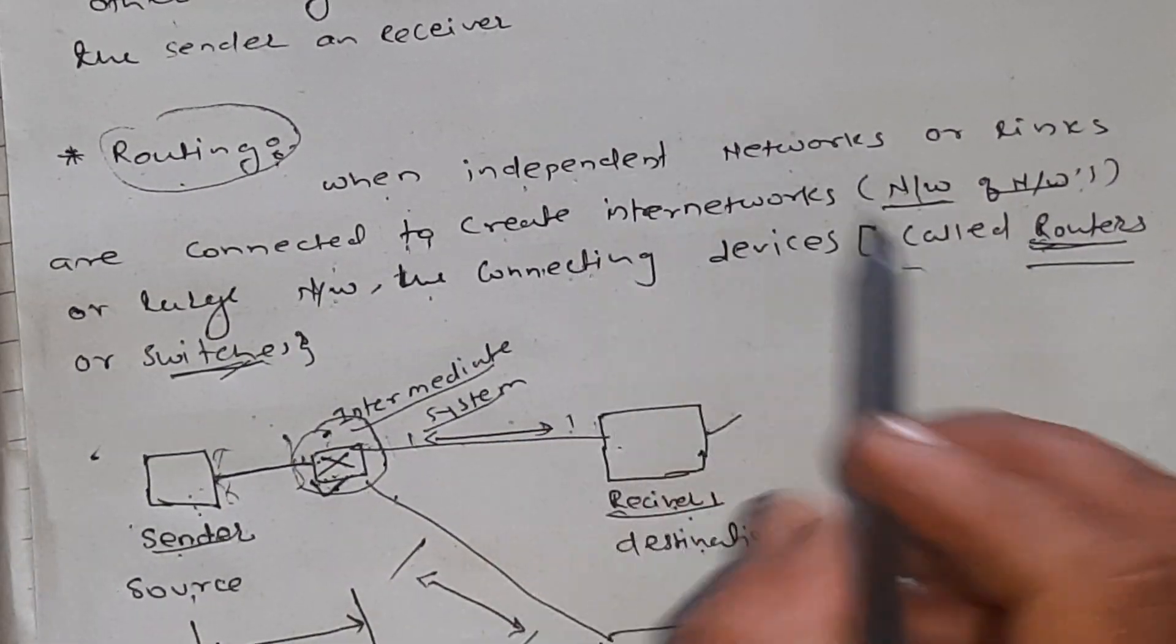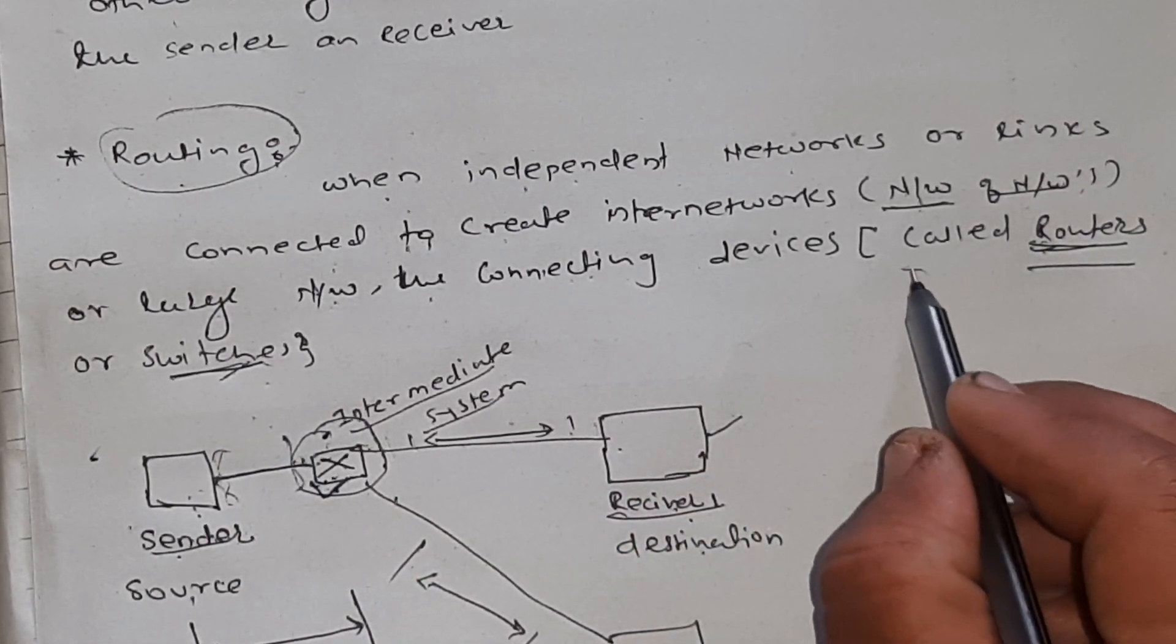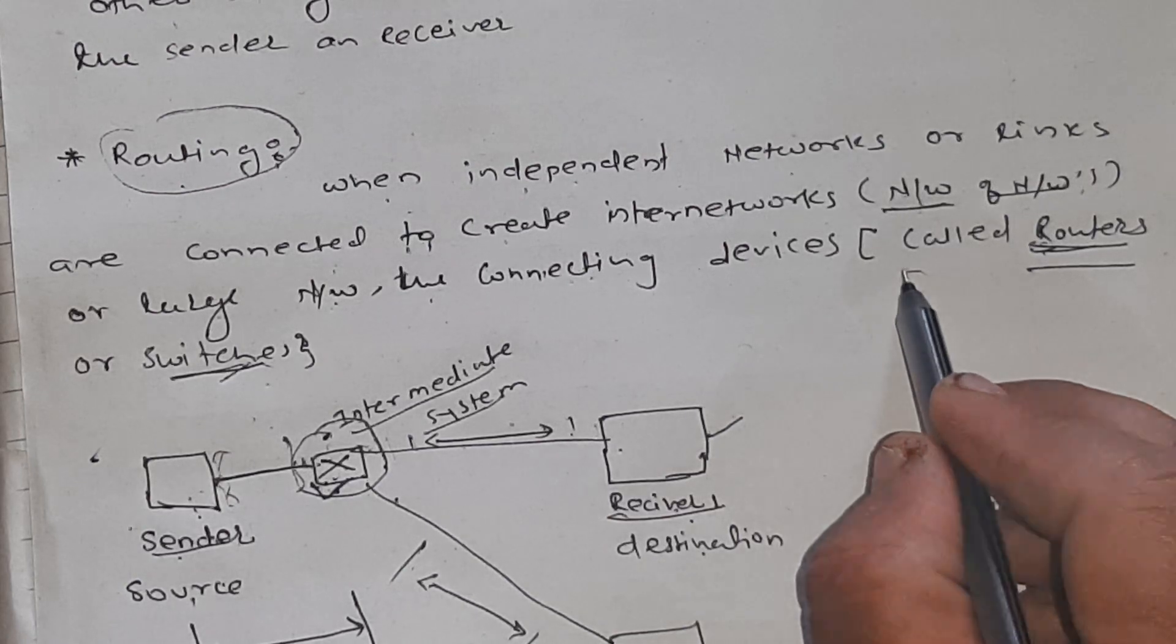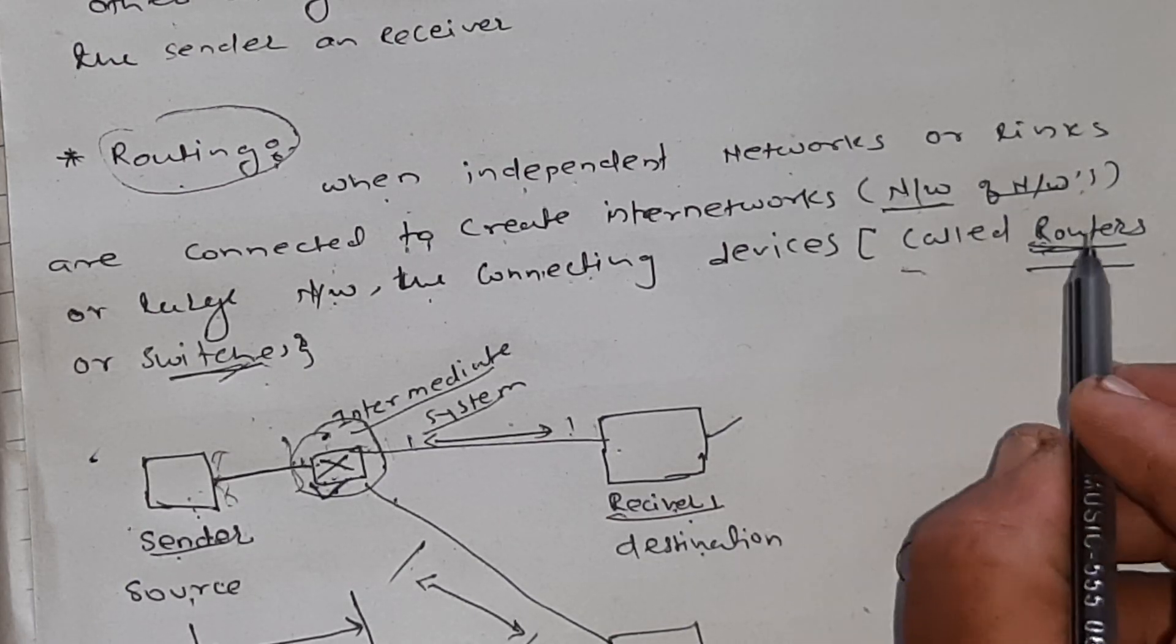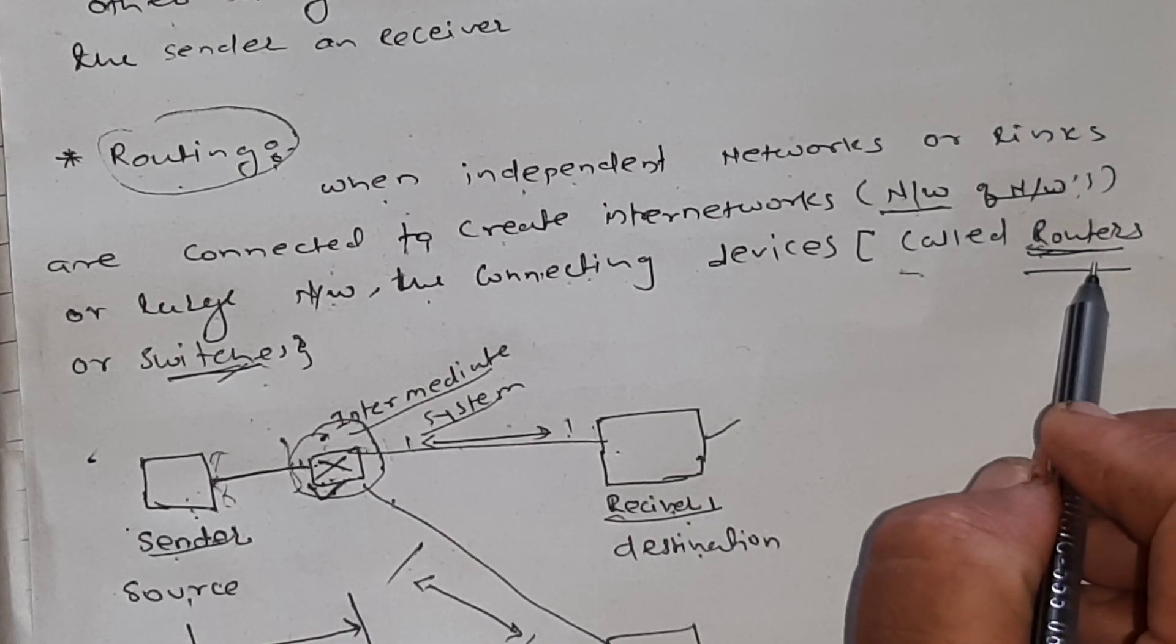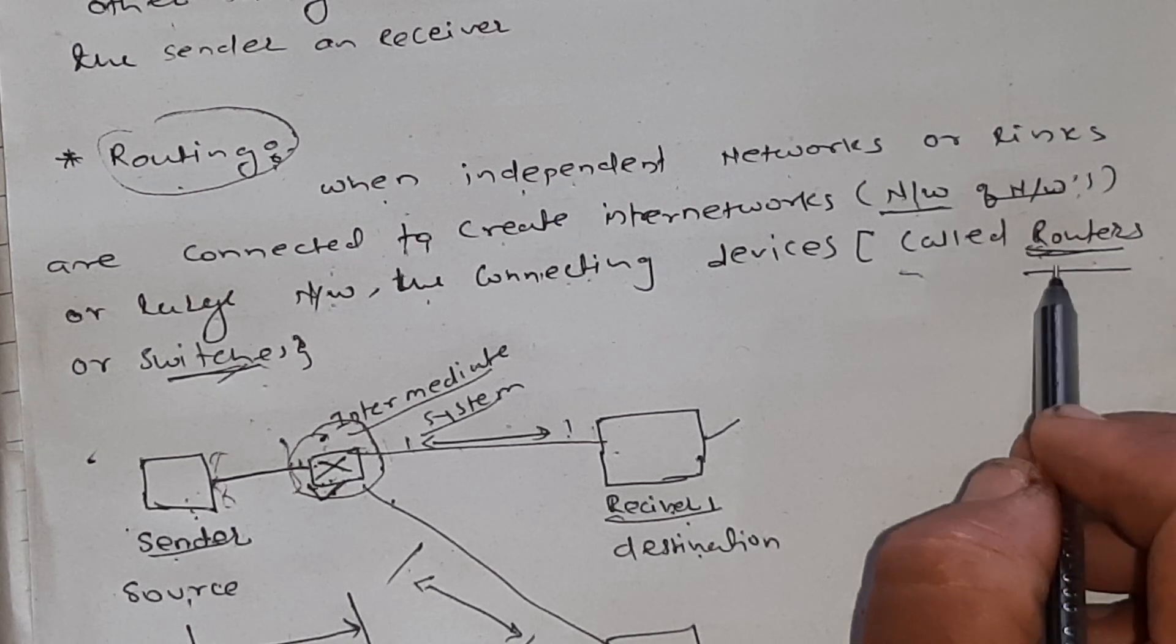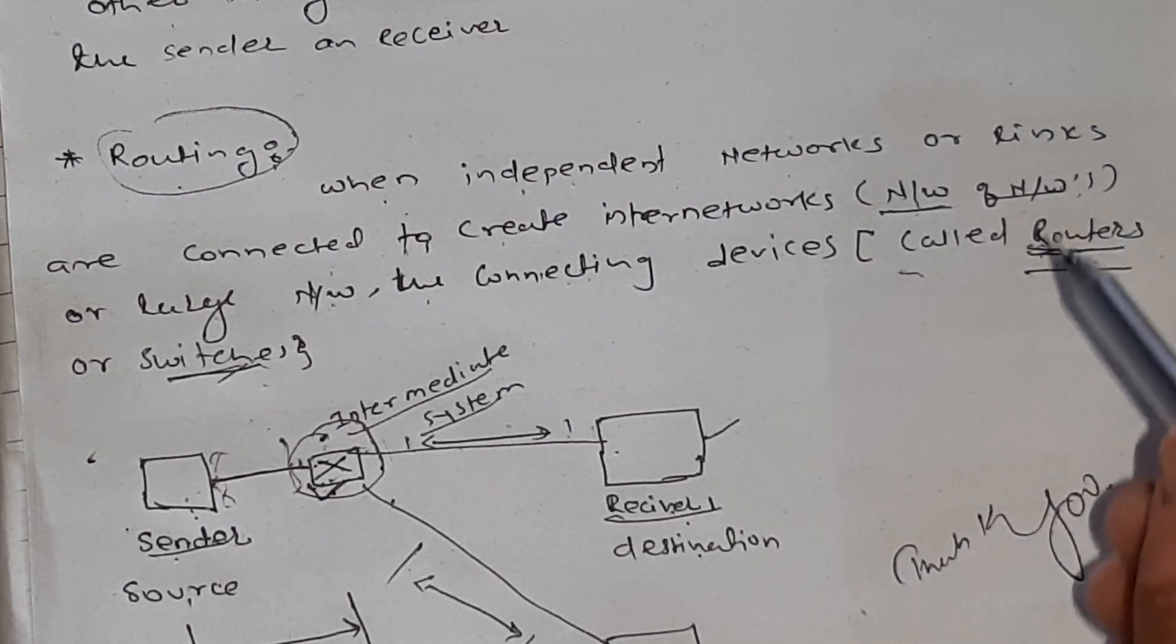The connecting devices are called routers or switches. When we create a big network or with big networks, we can use both routers and switches, so that we can use a number of systems to add to the network.